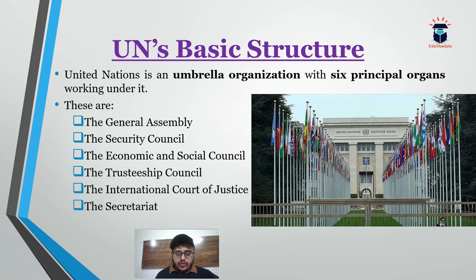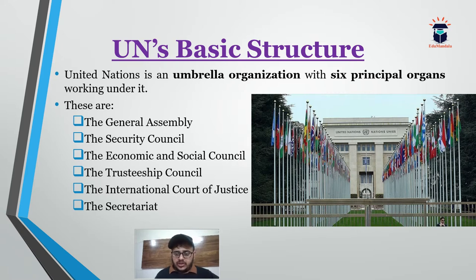The UN is a kind of umbrella organization with six principal organs working under it: the General Assembly, the Security Council, the Economic and Social Council, the Trusteeship Council, the International Court of Justice, and the Secretariat. These are the six principal organs through which the UN conducts its operations as mandated under the UN Charter.